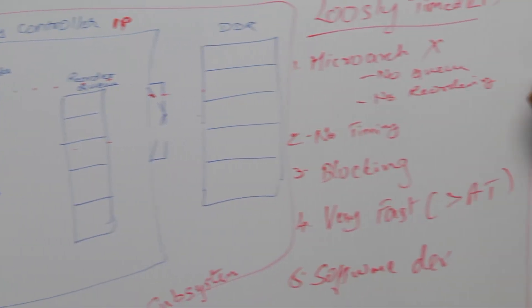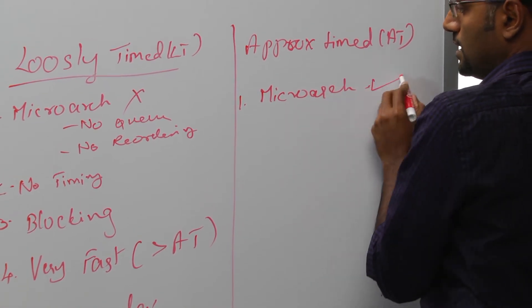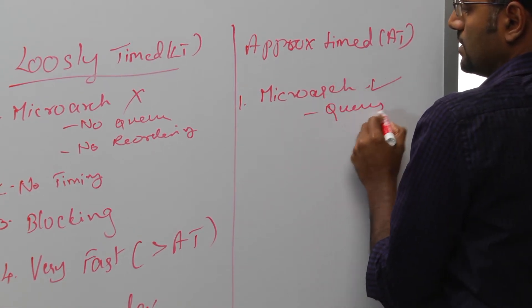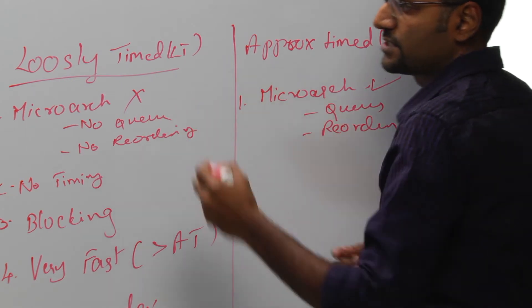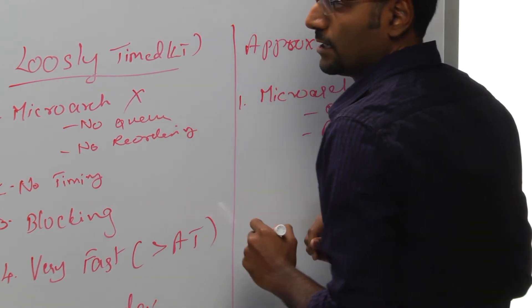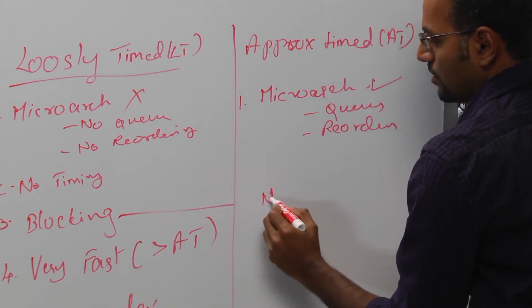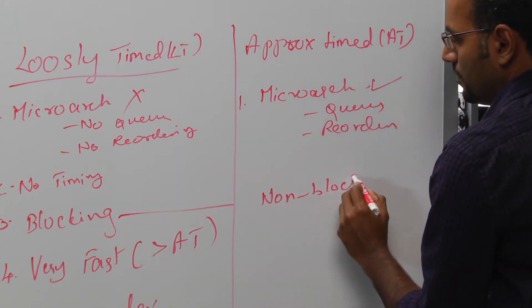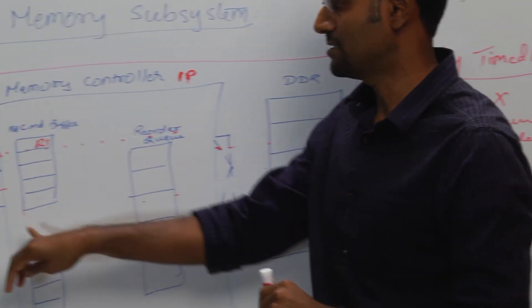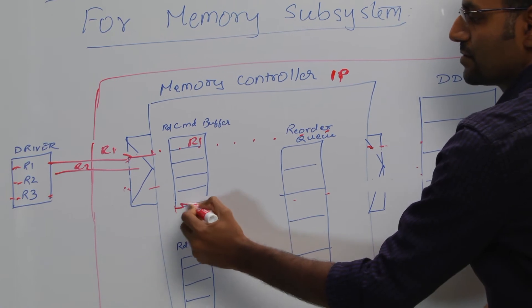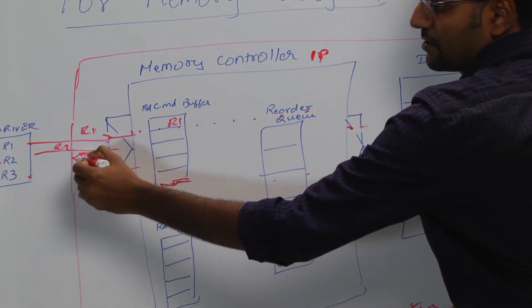So it does model microarchitectural components, queues for example. It models a reorder buffer. And it is non-blocking, meaning commands can be accepted as much as there is buffer space.